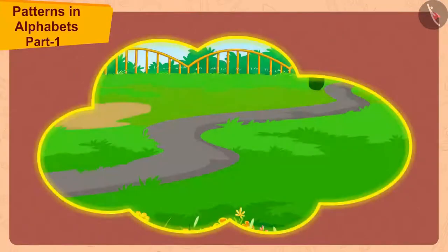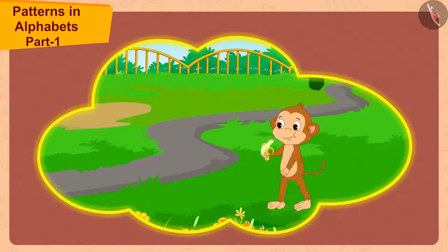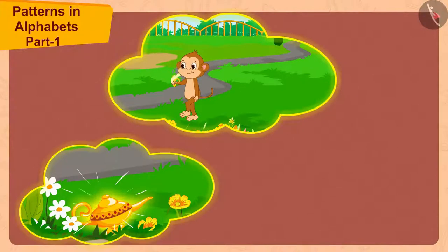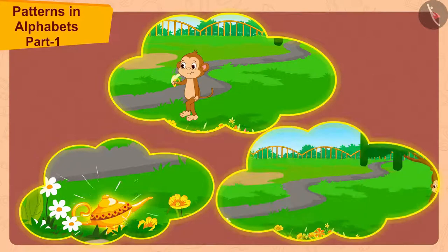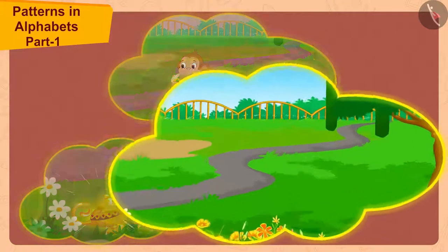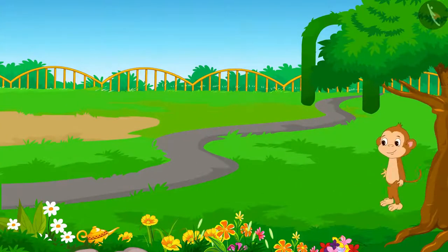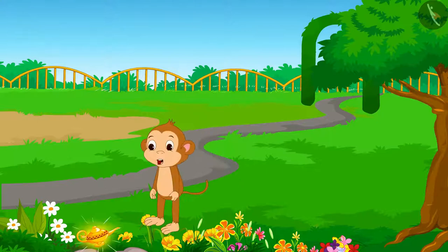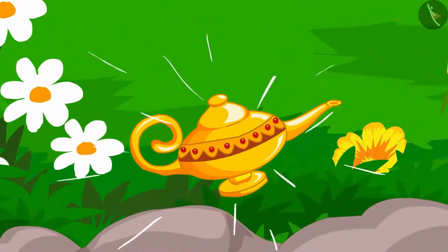Children, do you remember how Babban found a lamp while roaming in the park one day? From that day till today, Babban must have made at least one round of the park daily. Even today, he has come to the park in search of the lamp. And today, Babban finally saw the lamp once again.